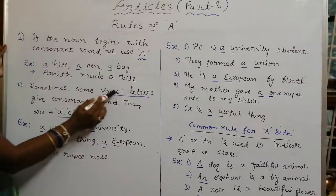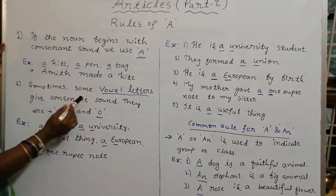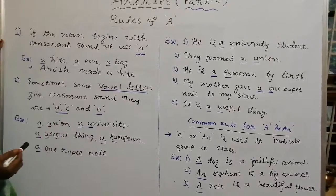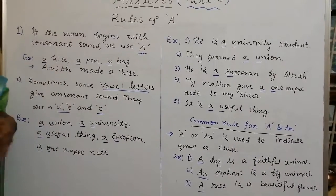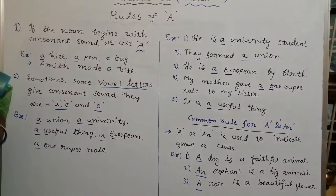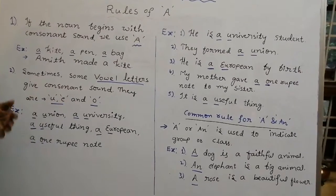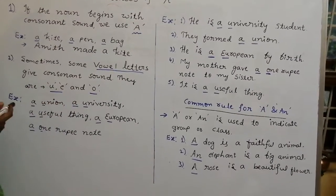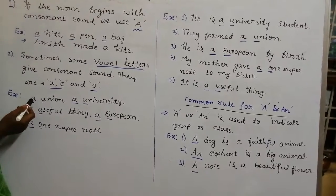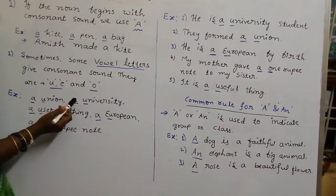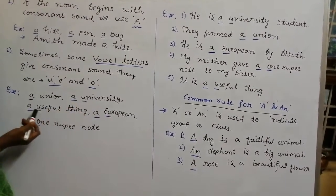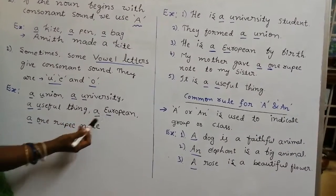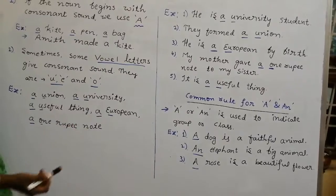Sometimes some vowel letters give a consonant sound. They are U, E, and O. Sometimes vowel letters give consonant sound, and at that time also we use A. The examples are: a union, a university, a useful thing, a European, a one rupee note.